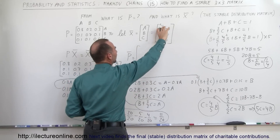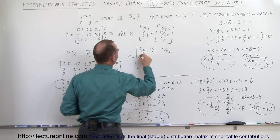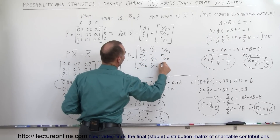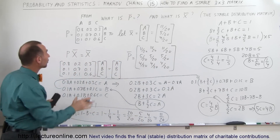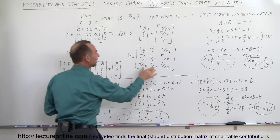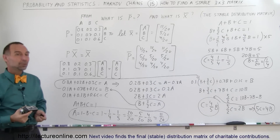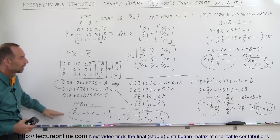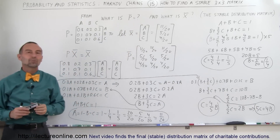The stable distribution matrix repeats this column three times: 11/20, 11/20, 11/20 in the first row; 5/20, 5/20, 5/20 in the second row; and 4/20, 4/20, 4/20 in the third row. This is the stable matrix — multiplying the original matrix by itself n times for very large n yields this result. Multiplying by an initial state vector gives the stable distribution, and that's how we work with a 3x3 Markov chain matrix, which can also be solved using calculators or computers.